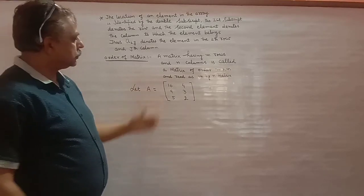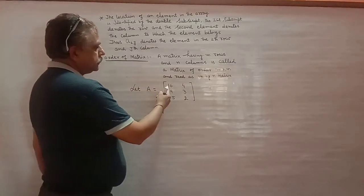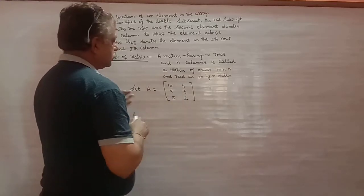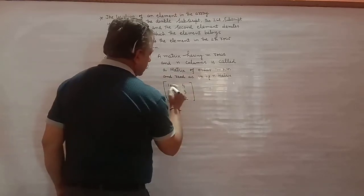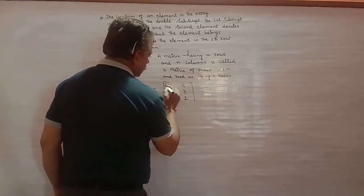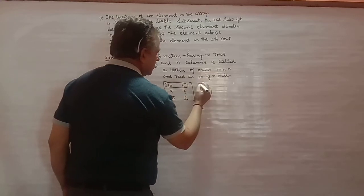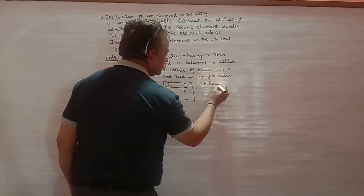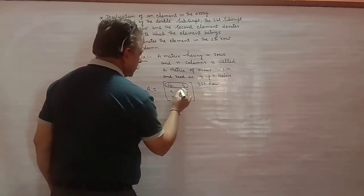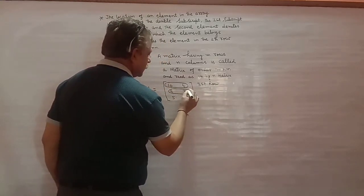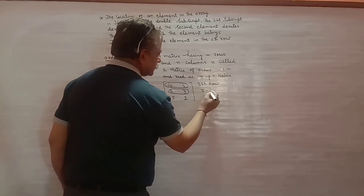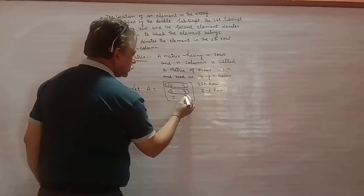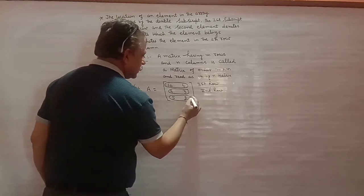Matrix A is equal to [[10, 4], [9, 3], [5, 2]]. तो यह सारा first row है, यह second row है, और यह third row है।